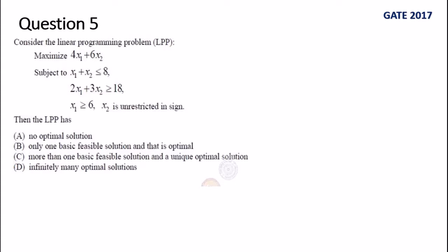Consider the linear programming problem: maximize 4x₁ + 6x₂ subject to these three constraints. x₂ is unrestricted in sign. Then the LPP has - out of these four options we have to select the one option which is correct.